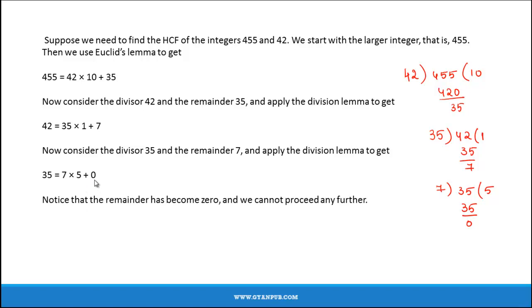Notice that the remainder has become zero, and we cannot proceed any further. Therefore, the HCF of 455 and 42 is 7.